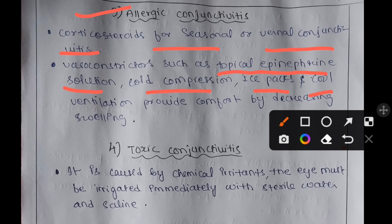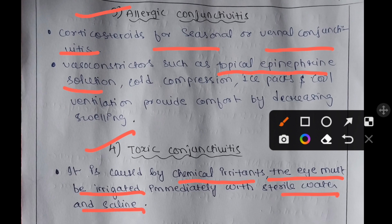Management of toxic conjunctivitis: since it is caused by chemical irritants, the eye must be immediately irrigated with sterile water and saline after exposure to the chemical irritants.